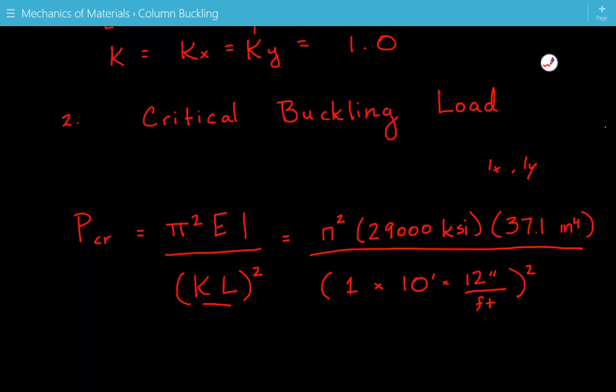To get the lowest critical buckling load, we're going to use the least moment of inertia. We compare Ix and Iy and use the smaller value. Iy is smaller at 37.1, so we use that.